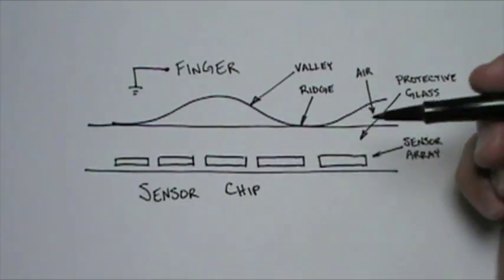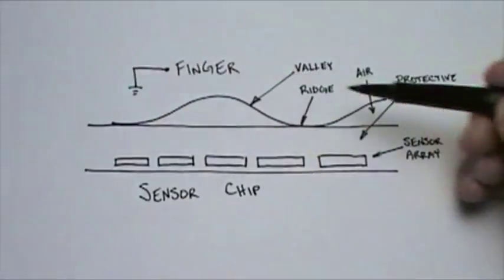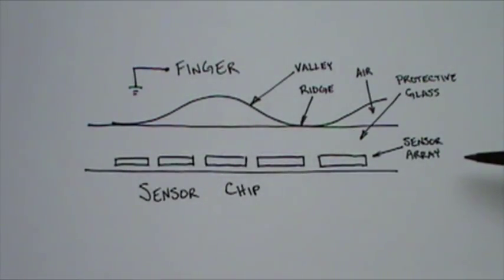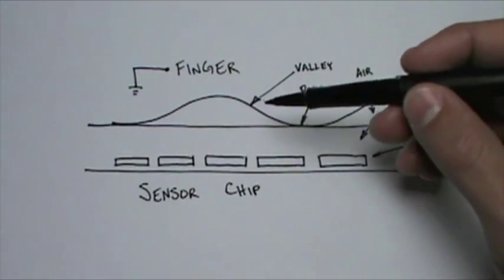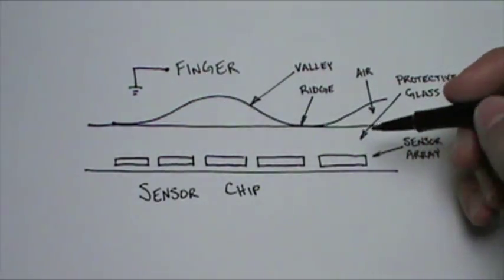Your finger is presumed to have ground potential because it is also touching the pieces of metal at the edges of the sensor. As your finger slides along, your fingerprints valleys and ridges come into contact with the glass.